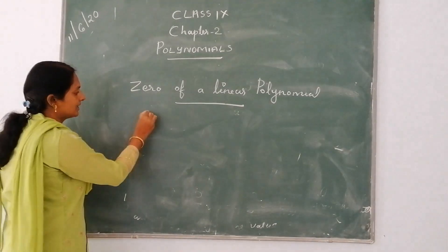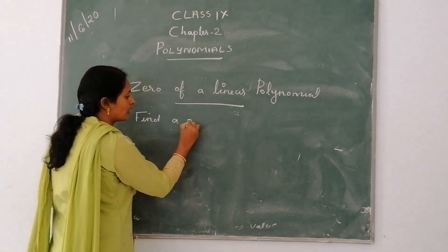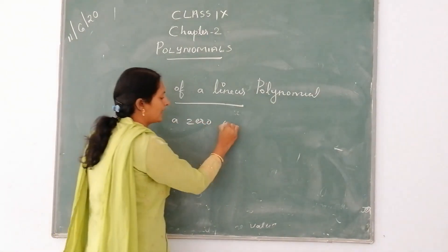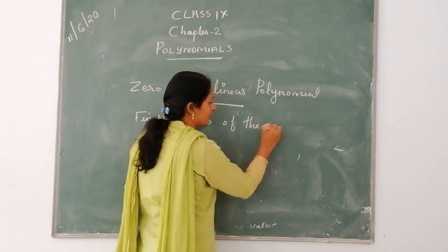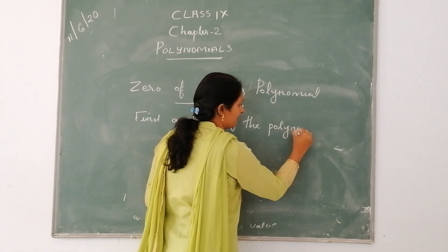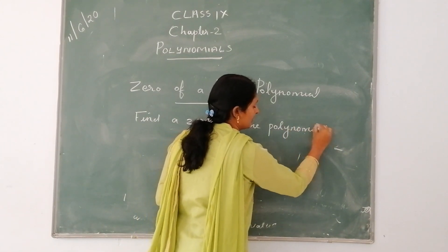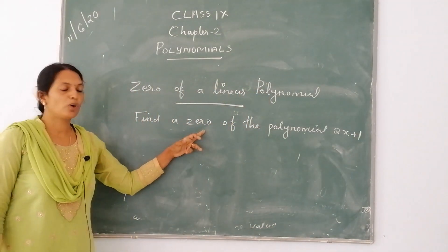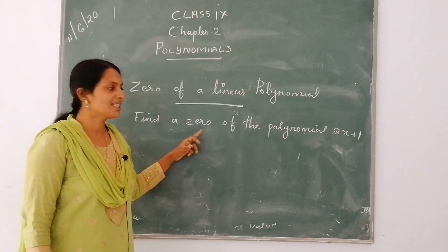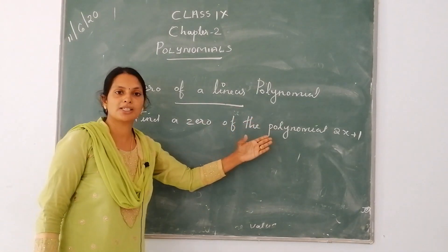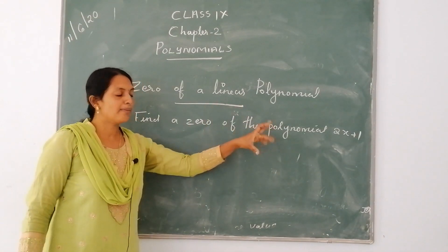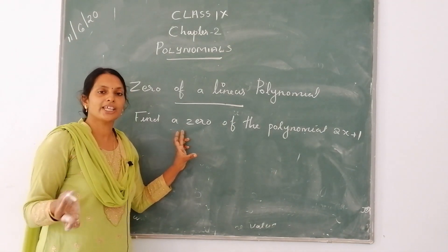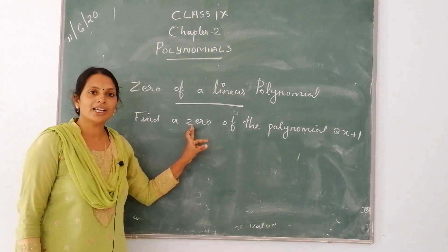Find a zero of the polynomial 2x plus 1. That means any value substituted into 2x plus 1 that makes the equation equal to zero — if you get zero, that value is the zero of the polynomial.